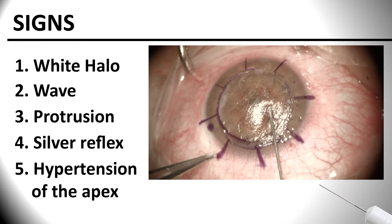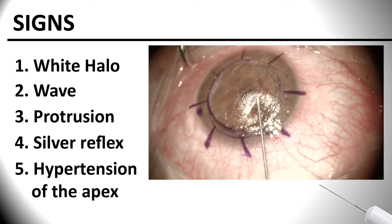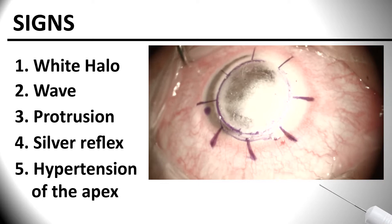Most of the time the bubble is formed correctly with fewer injections and it's evident. There are five signs to corroborate the correct formation: white halo, wave, protrusion, silver reflex, and hypertension of the apex.